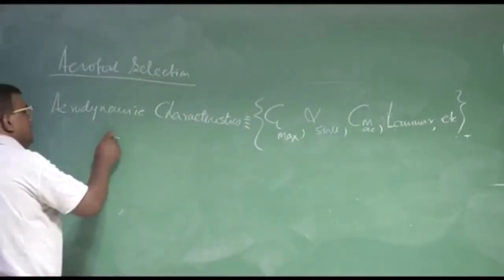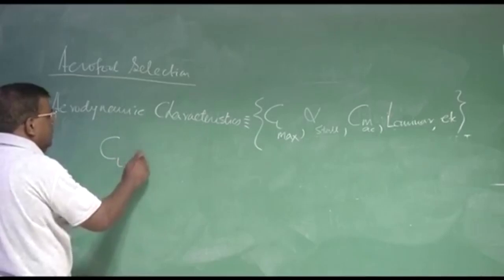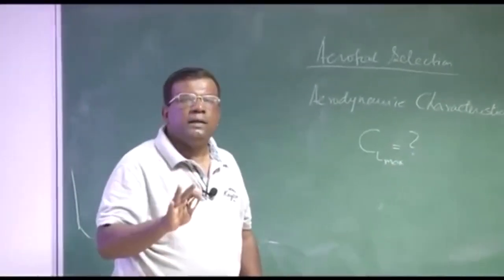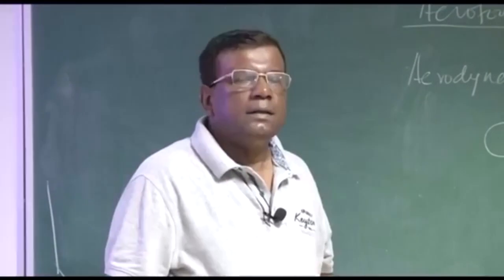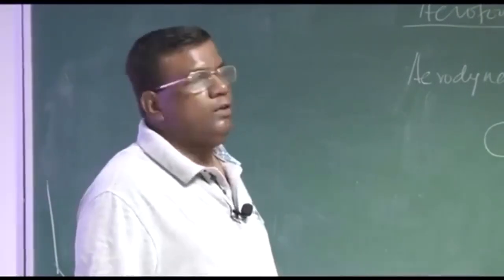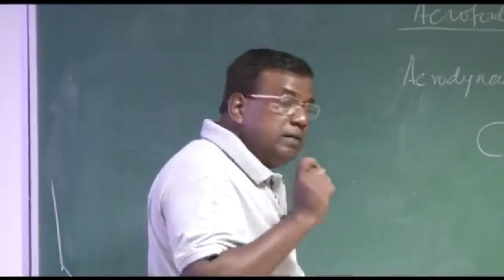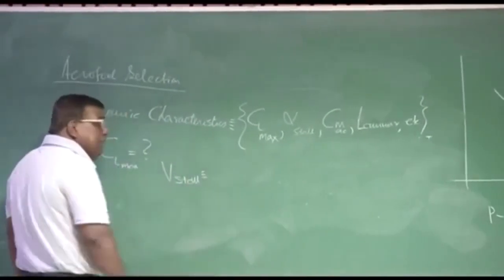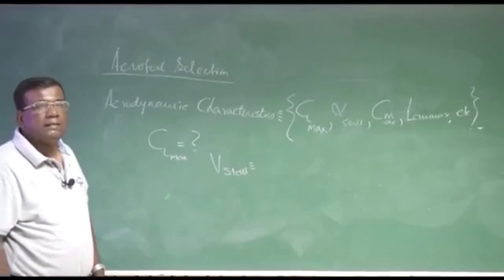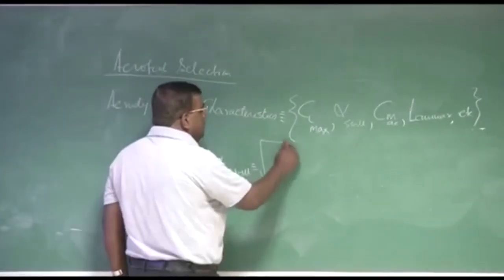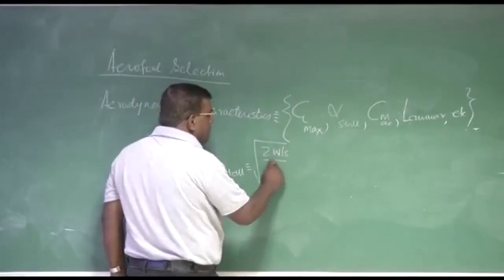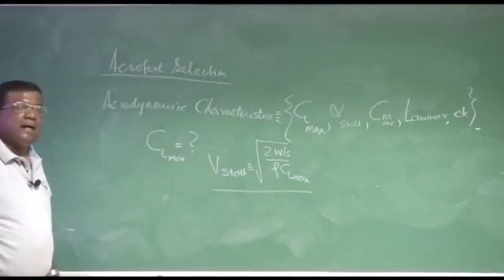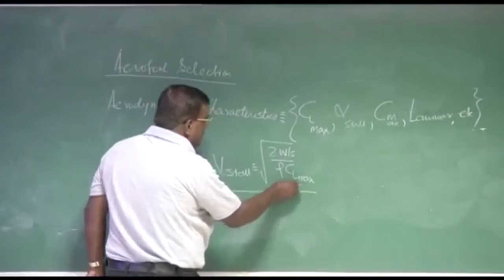If I take this CL max, we know that most of the time when the airplane will be flying it will not be flying at CL max, but why we are giving so much stress on CL max? For simple reason, at V stall, which we understand is the minimum speed at which the airplane can maintain a level unaccelerated flight, is given by 2 W by s rho CL max. So if CL max is higher, then your V stall is lower.